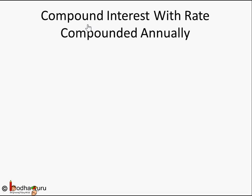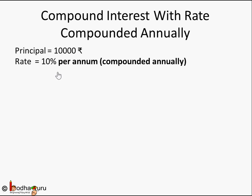Let's take the most common case: compound interest compounded annually. Principal is 10,000 rupees, rate of interest is 10% per annum, compounded annually. If it's not written, you assume it is compounded annually — but always cross-check. Compounded annually means the interest is added to the principal after one year, and that rate is used to calculate simple interest for each year.